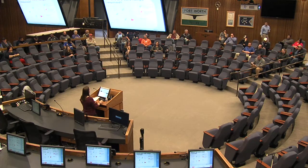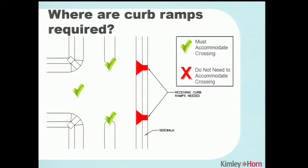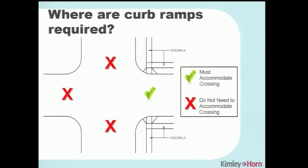Here's a diagram showing the same scenario but now with sidewalk on the east side of the road. The diagonal curb ramps on the west side are triggering the need for receiving curb ramps on the east side. Additionally, since there's sidewalk on the east side, it was probably a good idea to install those anyway for connectivity. In either case — whether sidewalk exists or not — you are required to install the receiving curb ramps.